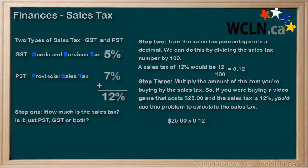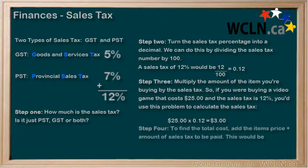In this example, it would be $3. To find the total cost, add the item's price plus the amount of the sales tax that you have to pay. This would be $25 plus $3, giving you a total of $28.